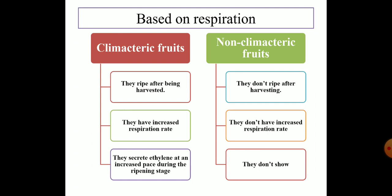Moreover, climacteric fruits secrete ethylene — the ripening hormone — at an increased pace during the ripening stage. This increased ethylene secretion is not present in the case of non-climacteric fruits.